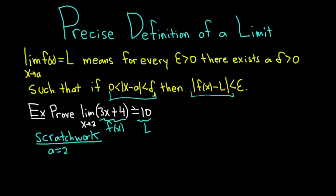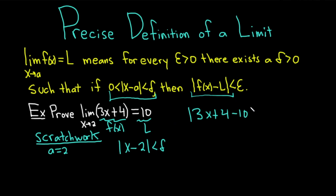We just basically write down the definition. We have the absolute value of x minus a less than delta, so for us that's the absolute value of x minus 2 less than delta. The second piece says the absolute value of f of x minus l is less than epsilon. So for us, that's going to be the absolute value of 3x plus 4 minus 10, and that's less than epsilon. Then you just keep simplifying: 3x minus 6, because 4 minus 10 is negative 6, and that's less than epsilon.